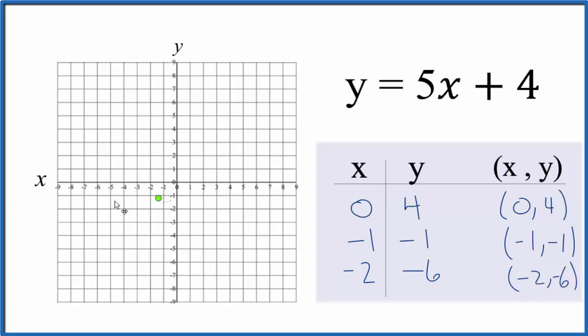So we have 0, 4. x is 0, y is 4. Then we have x is negative 1, y is negative 1. So negative 1, negative 1.